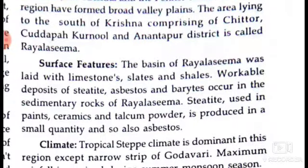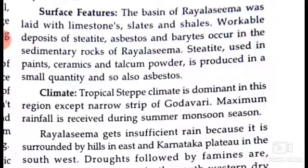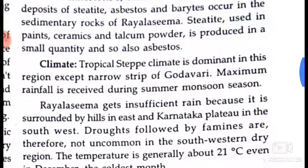The basin of Rayalaseema was laid with limestone, shales, and slates. Workable deposits of steatite, asbestos, and mica occur in the sedimentary rocks of Rayalaseema. Steatite is used in paints, ceramics, and talcum powder and is produced in small quantities, and so also asbestos.